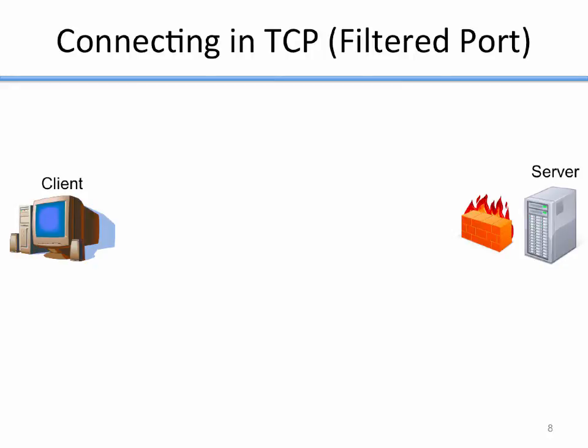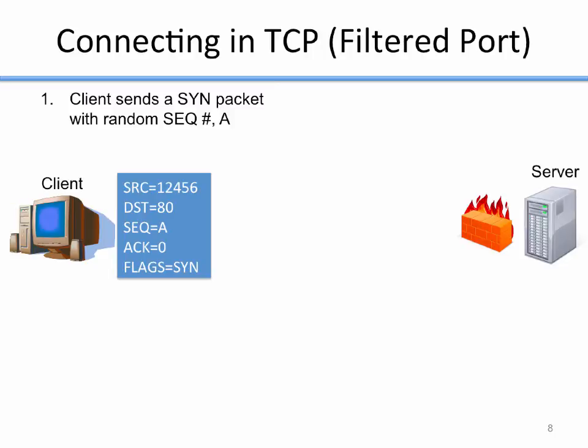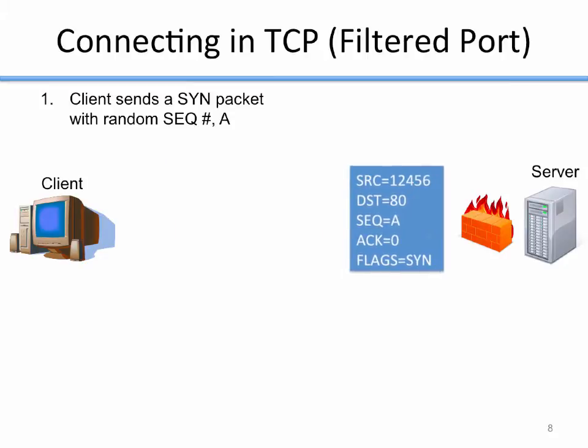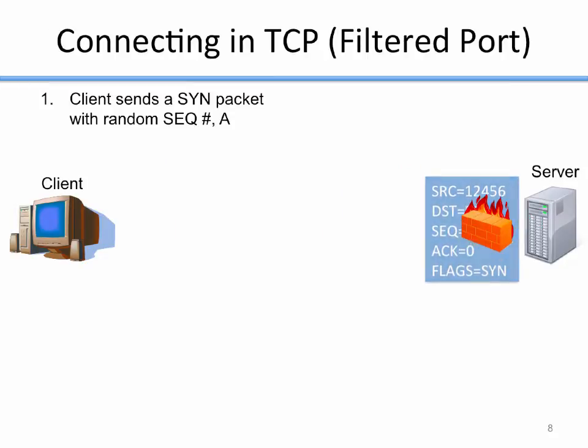If I'm connecting to a filtered port — say, where there's a firewall in place — my client generates the same SYN packet, sends it to the server, but the firewall gets it and throws it away. The server itself never sees my SYN packet, so there is no step two because the server never replies.